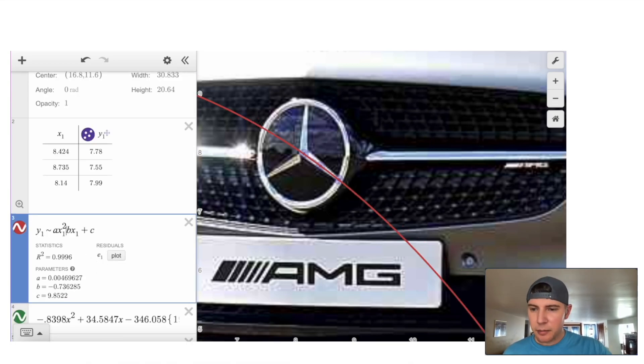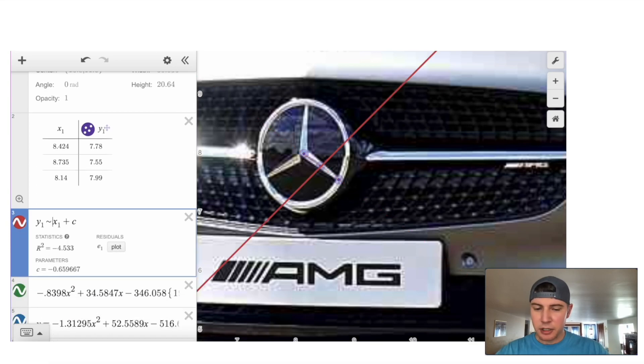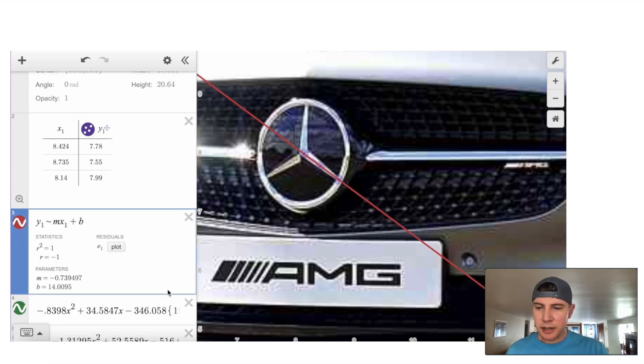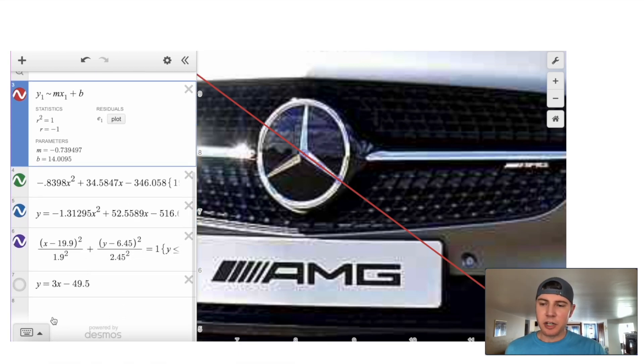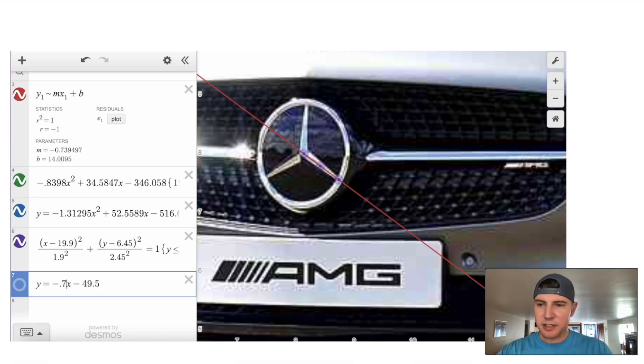And really, this works already because it says a is basically zero. But if you wanted to, you can make this linear by just making it y equals mx plus b. And now it's giving you the parameters for m and b. And you just write that equation here and just change this, negative 0.74x plus 14.